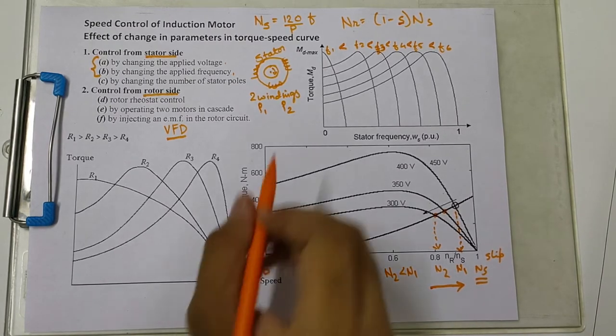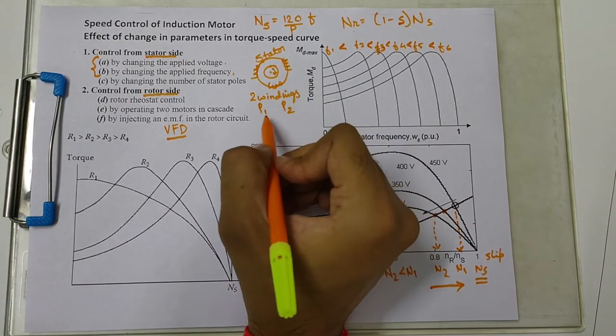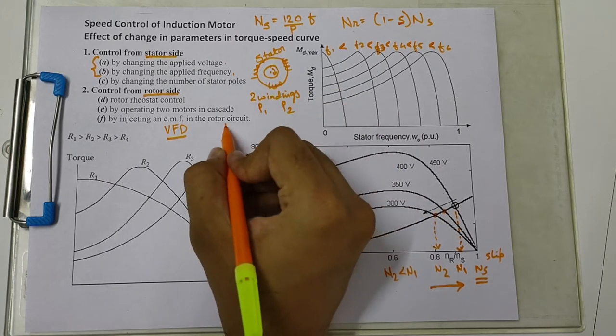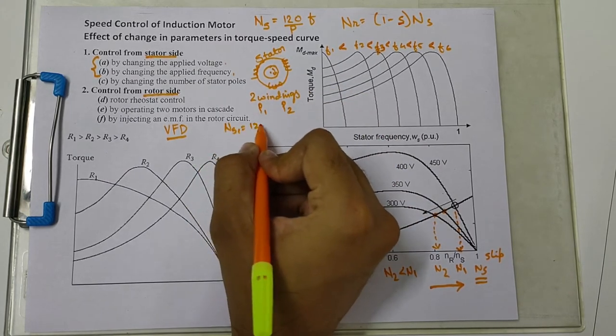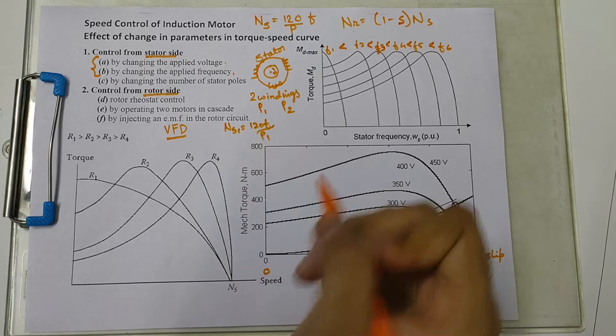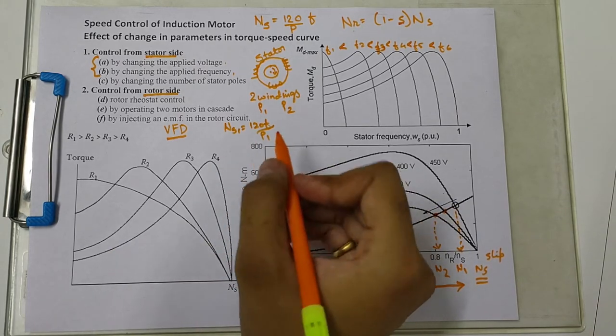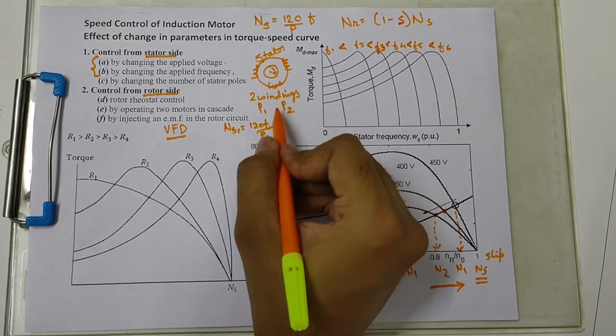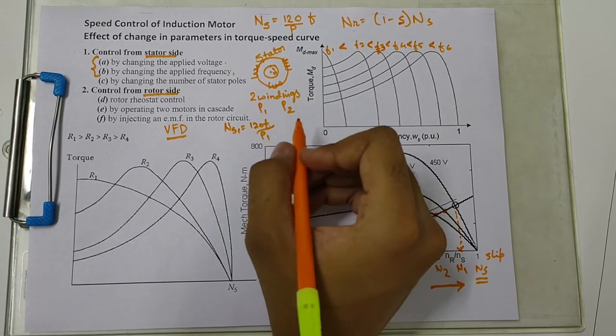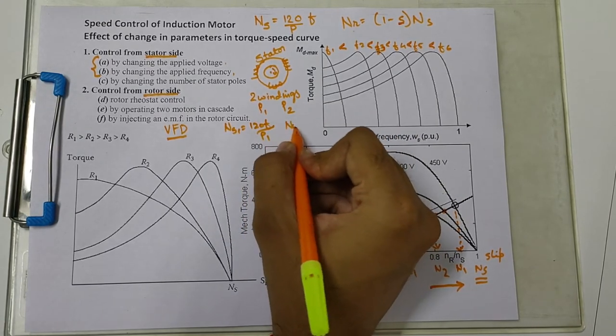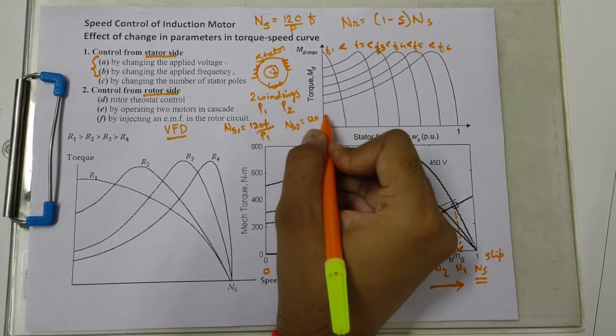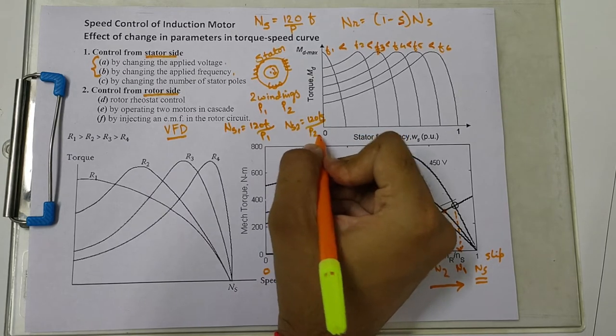If we supply to winding 1, then speed will be ns1, which is 120f by p1. And if we give supply to winding 2, which has a different number of poles, then the speed will be ns2, which is equal to 120f upon p2.